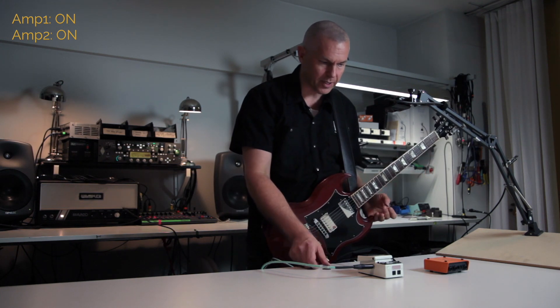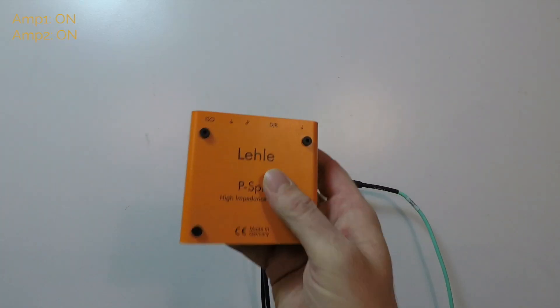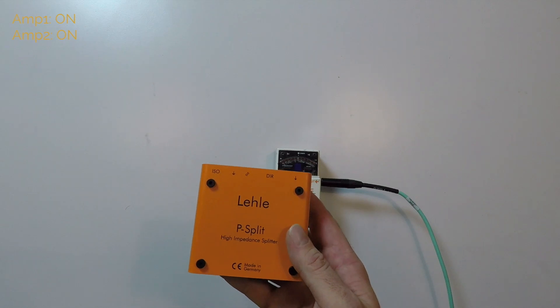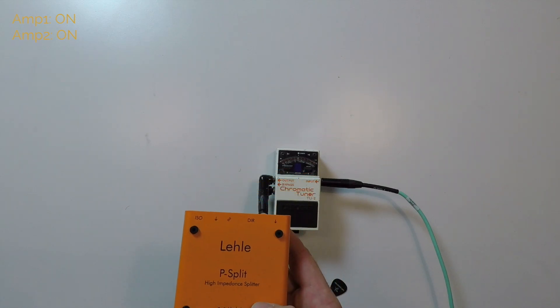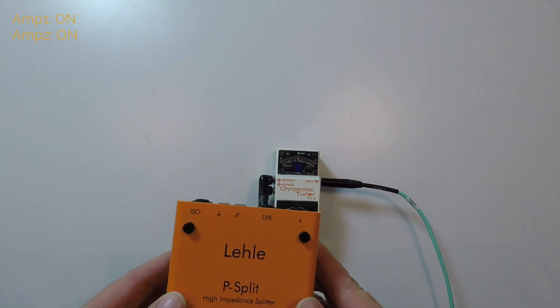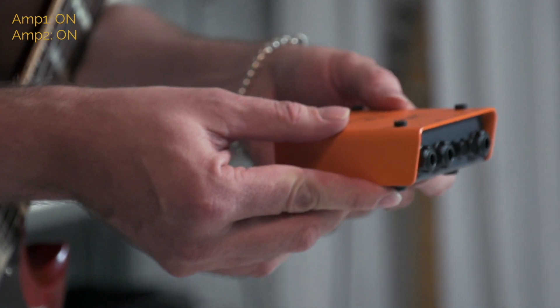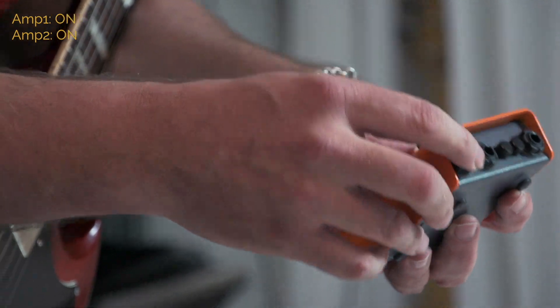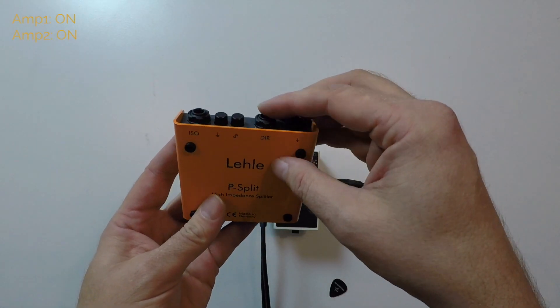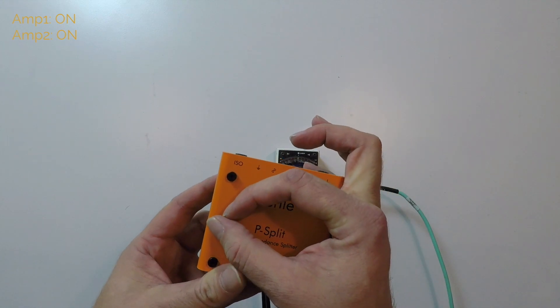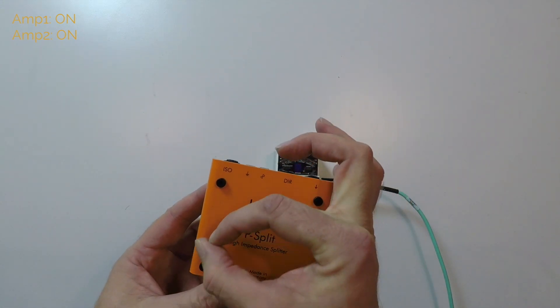But what we can do now is place this box. I said in one other video that this little Lehle is the most used Lehle box, but to be honest, this is the most used and most easiest to use box. First of all, it's totally passive. You don't need battery or power supply. It has one input, it has two outputs. One is direct and one is isolated. There is a really high quality isolation transformer here inside.